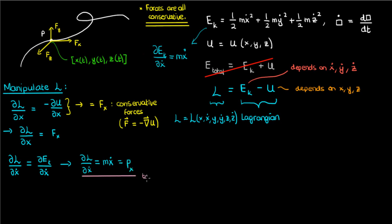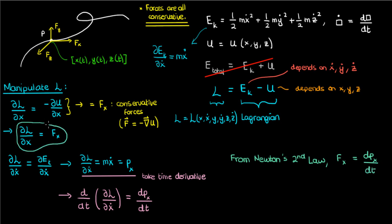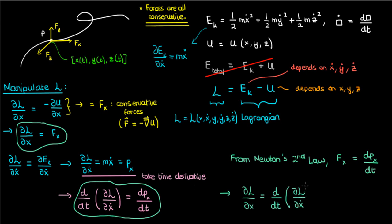Now if we take the time derivative of this whole equation, we get the time derivative of ∂L/∂ẋ equals the time derivative of x-momentum. Newton's second law says the net force in the x-direction equals the rate of change of x-momentum, and since fx equals ∂L/∂x, and since the rate of change of momentum equals d/dt(∂L/∂ẋ), we can say that ∂L/∂x equals d/dt(∂L/∂ẋ) using Newton's second law. This equation is called a Lagrange equation.